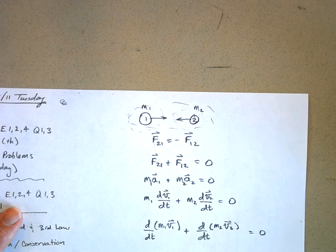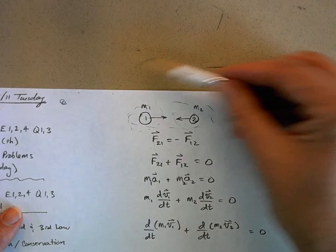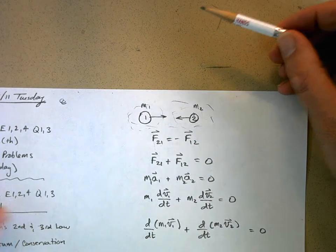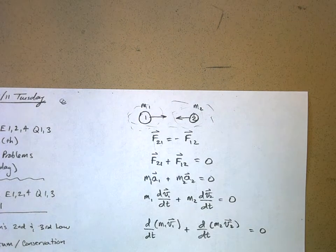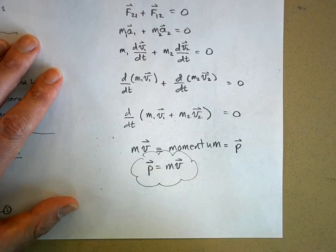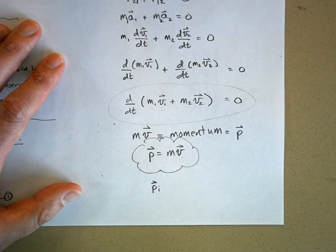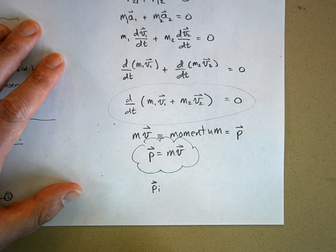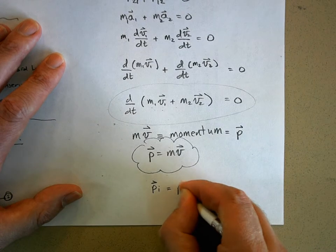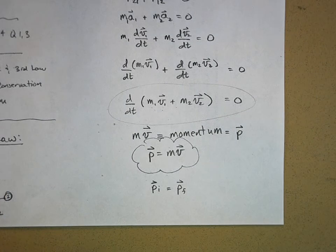For an isolated system, momentum is conserved - that is, the sum of the momenta (the plural of momentum). If I add the momentum of all the different particles - two, three, ten, or a thousand particles - all interacting with each other, and I define that collection as an isolated system, then the momentum of that system is conserved. We express this as: p_initial equals p_final.